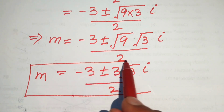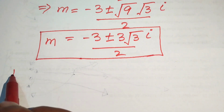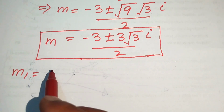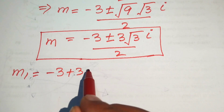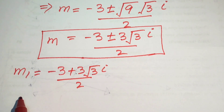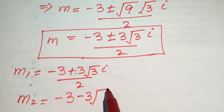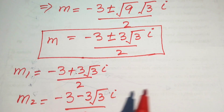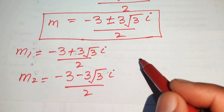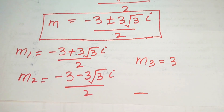These two roots are complex roots. The three roots of the given equation are: the first complex root is negative 3 plus 3 times square root of 3 times iota, divided by 2; the second complex root is negative 3 minus 3 times square root of 3 times iota, divided by 2; and the third real root is m equals 3. These are the final answers. Thank you for watching — please subscribe for more videos.